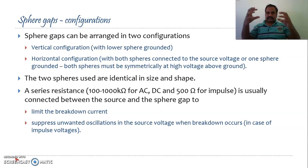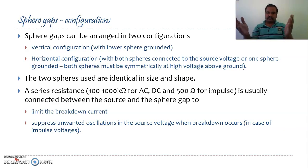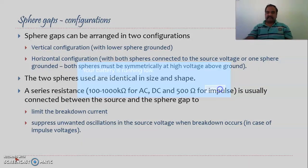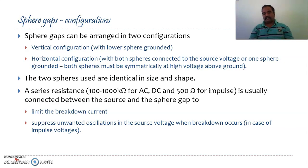The two spheres must be identical in size and shape. Whenever you are applying voltage, to protect the arrangement you use a protective or series resistance. Its value will be somewhere around 100 to 1000 kilo-ohms for AC/DC, and somewhere around 500 ohms for impulse voltage in practice. This resistance is used between the source and the sphere gap to limit the breakdown current — because if spark-over happens immediately the current will be very high — and also to suppress any unwanted oscillations in the source voltage when breakdown occurs.